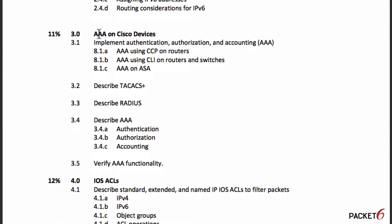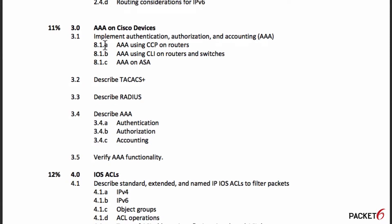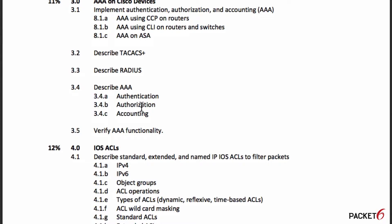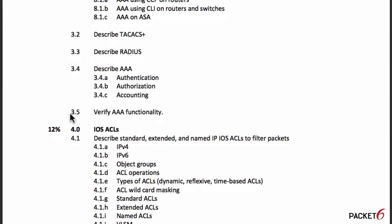Objective 3 covers AAA on Cisco devices and is 11% of the exam. You'll need to know how to configure AAA using CCP, command line interface, and also on the ASA. You also need to describe TACACS+ and RADIUS in AAA — what is the difference between them, what is AAA, what is authentication, authorization, and accounting. Objective 3.5 introduces the keyword 'verify,' meaning you'll use show commands to verify that AAA is working.